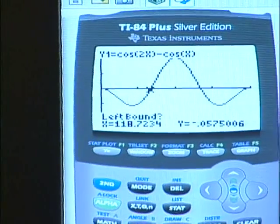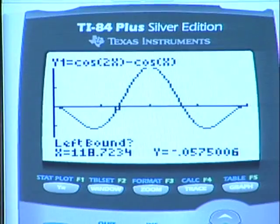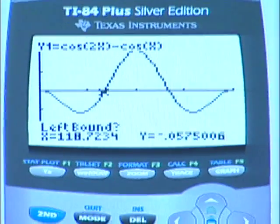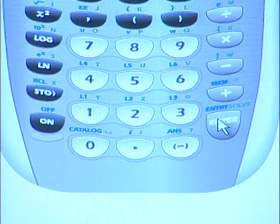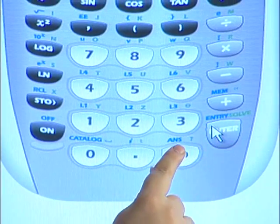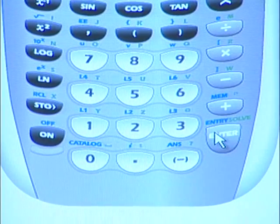For the second x-intercept I would like to enter the left bound and right bound using the keyboard. The left bound is 180 degrees obviously. The right bound is 270 degrees. And the second x-intercept is 240 degrees.